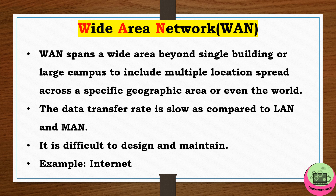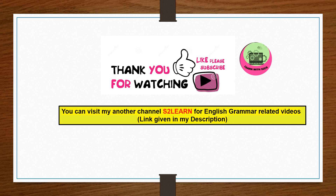The last type is Wide Area Network (WAN). It spans a wide area beyond a single building or large campus, covering multiple locations spread across a specific geographic area or even the world — for example, connecting computers spread across states or countries. As the coverage area increases, the data transfer rate and speed are lower compared to LAN and MAN, and it is difficult to design and maintain. The best example of a WAN is the internet. Thank you for watching — please subscribe for more informative videos.